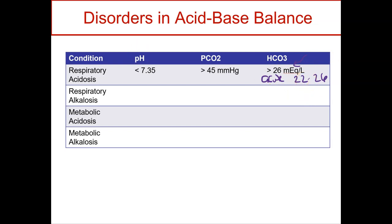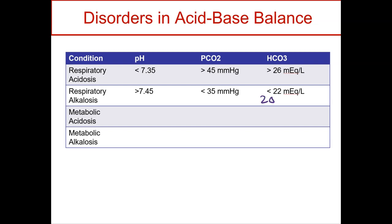For respiratory alkalosis, if it's the lungs causing it, I'm hyperventilating, so my CO2 is too low. If it's acute, my bicarb would be normal — and you're most likely going to see the acute form of respiratory alkalosis. However, if the kidneys buffer for alkalosis, they try to get rid of the base, so my bicarb actually falls. If it's acute, bicarb is normal with only two abnormal values. If it's compensated, all three values — pH, CO2, and bicarb — are off.